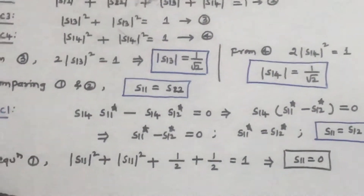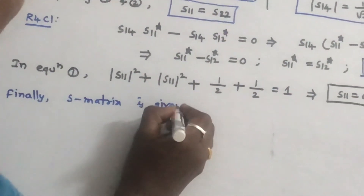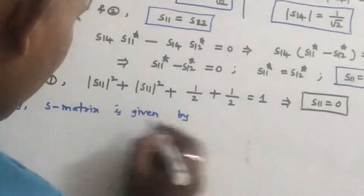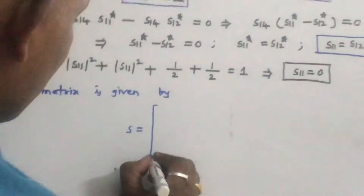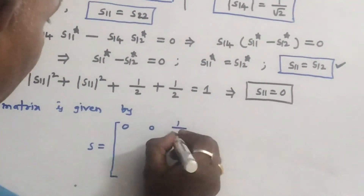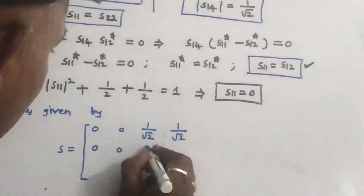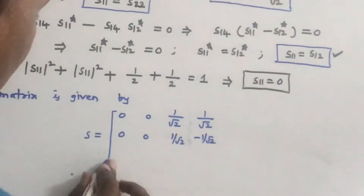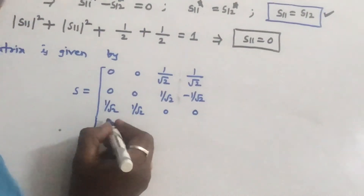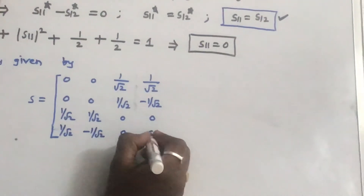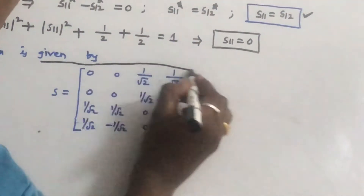Finally, the S-matrix of Magic T is given by: first row [0, 0, 1/√2, 1/√2]; second row [0, 0, 1/√2, −1/√2]; third row [1/√2, 1/√2, 0, 0]; fourth row [1/√2, −1/√2, 0, 0]. This is the S-matrix of the Magic T.